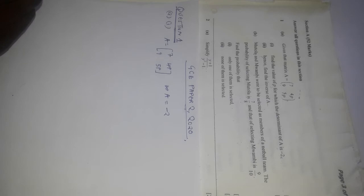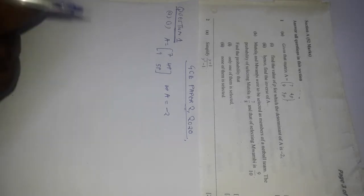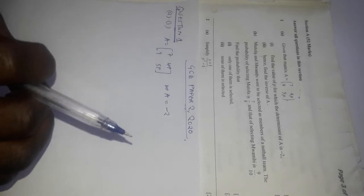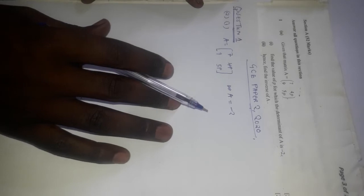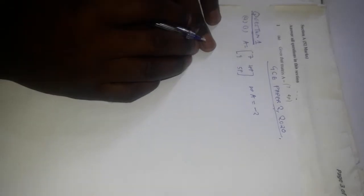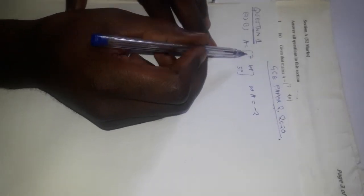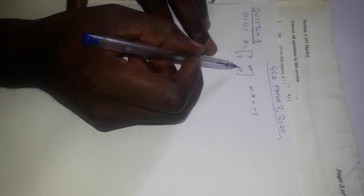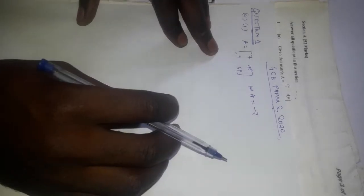How can we find the value of P when the determinant has been provided? It is actually quite simple. We use the concept of finding the determinant of a matrix. It is a 2 by 2 matrix. To find the determinant, you multiply the major diagonal elements and subtract the product of the minor diagonal.